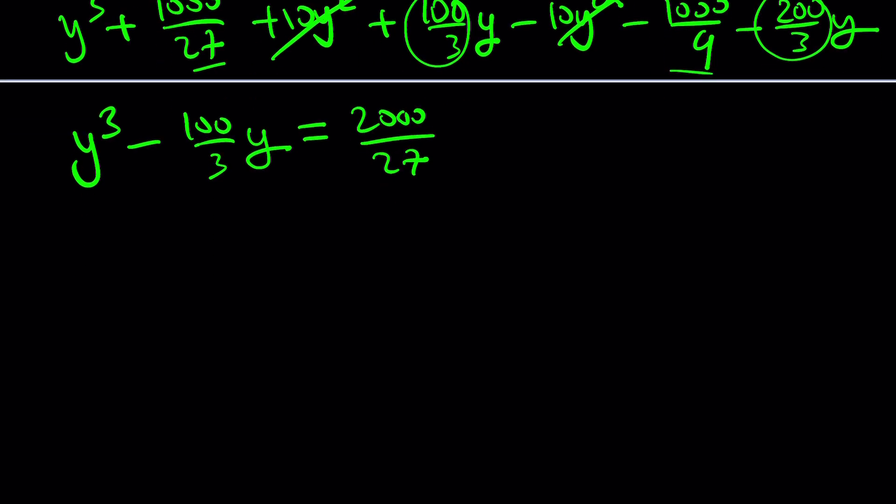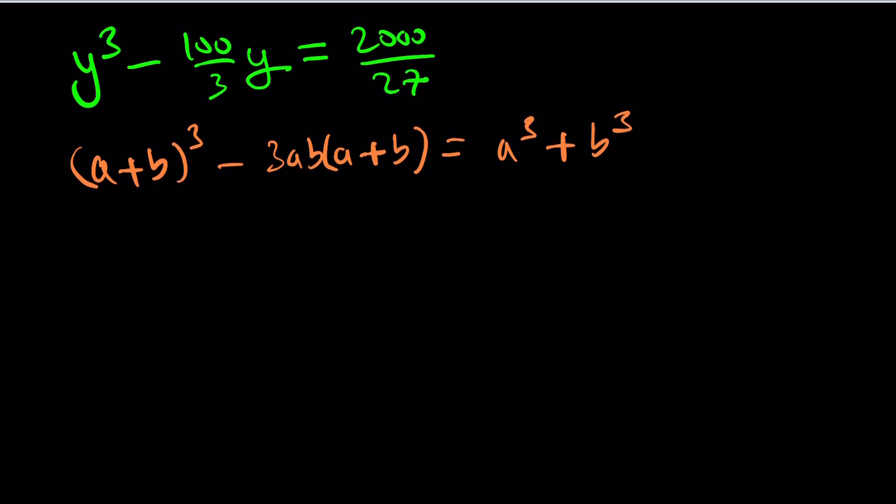So now, what are we going to do with this? Well, we're going to remember the following identity, which is something that I almost always use. This basically factors sum of two cubes, which you can then turn into two factors. But here, this allows you, if you set a plus b equal to y, then this is going to allow you to come up with the cubic equation. So let's go ahead and set a plus b equal to y. And then comparing the coefficients, we notice that 3ab must equal 100 over 3, and a cubed plus b cubed must equal 2000 divided by 27.